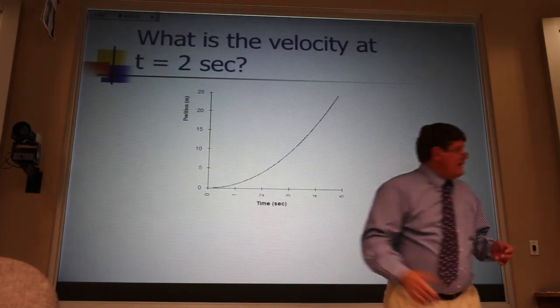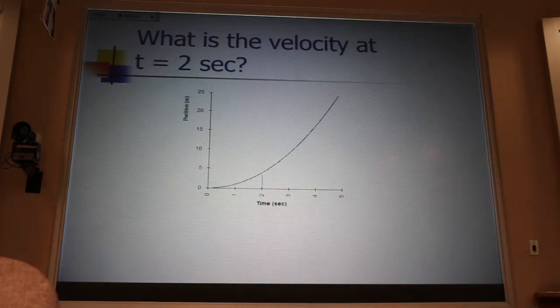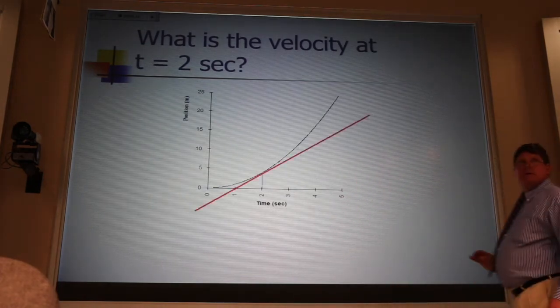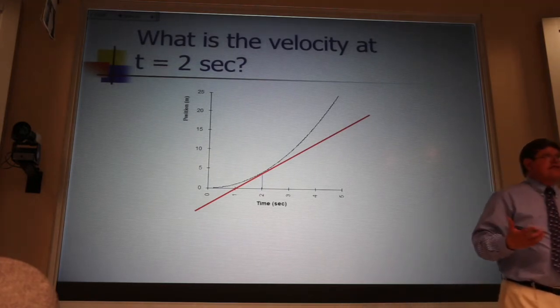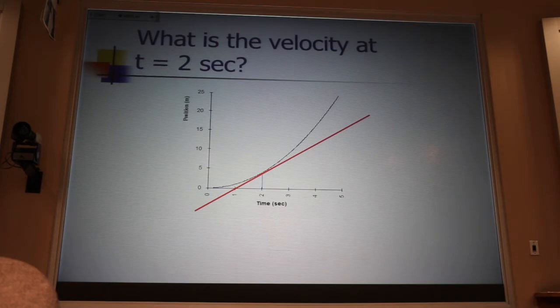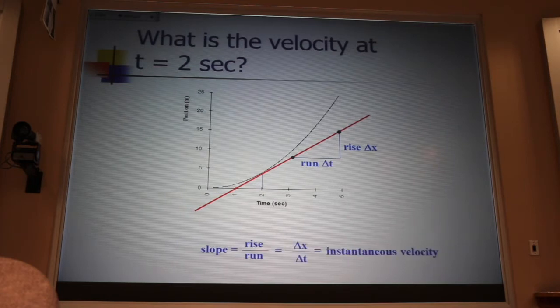Draw a tangent line. And once I draw that tangent line, what do I do? Find the slope. I pick any two points on that tangent line, and I compute the rise over the run, and that's going to give me the instantaneous velocity.